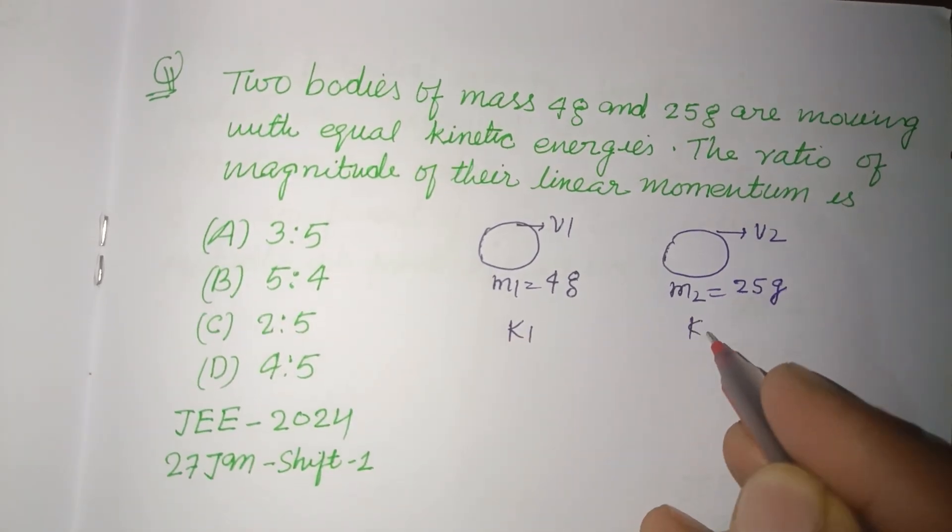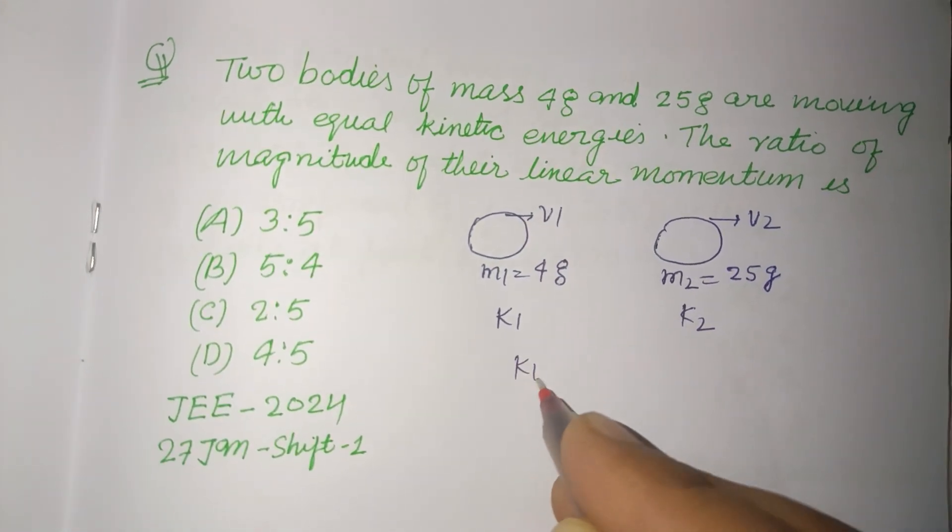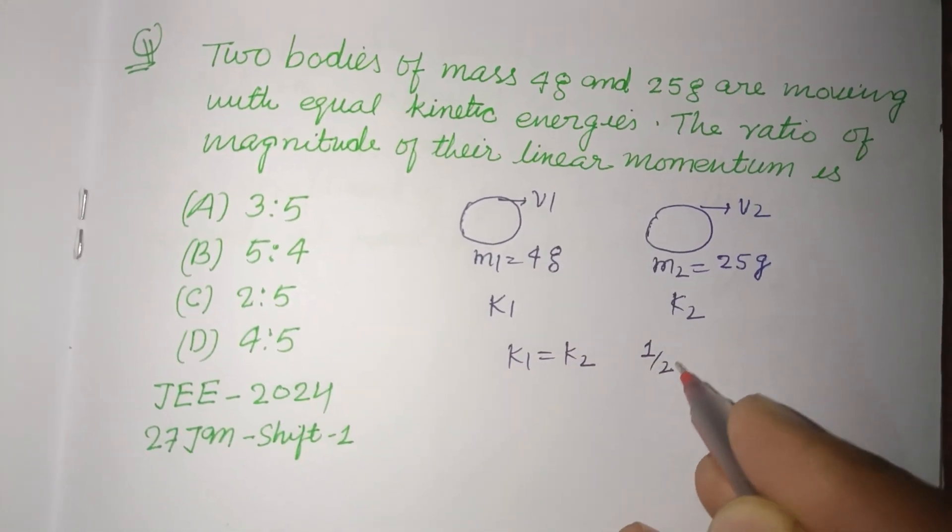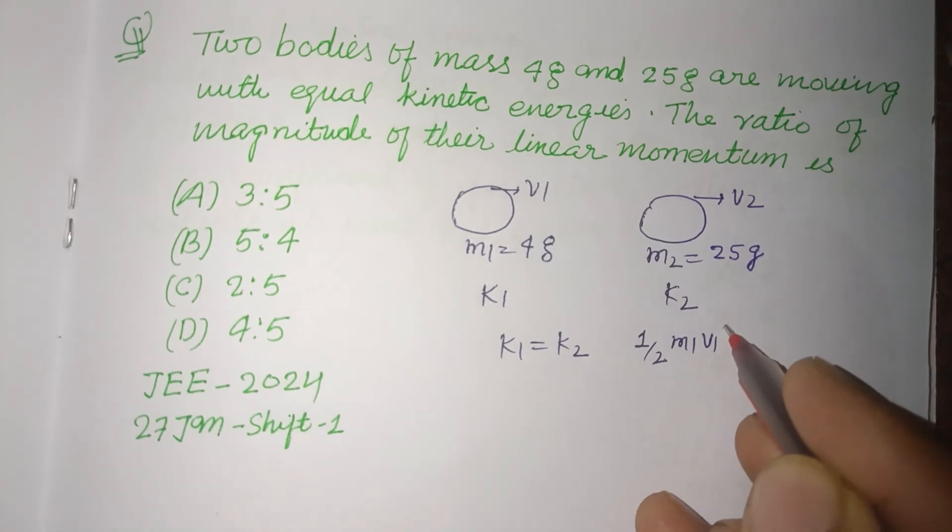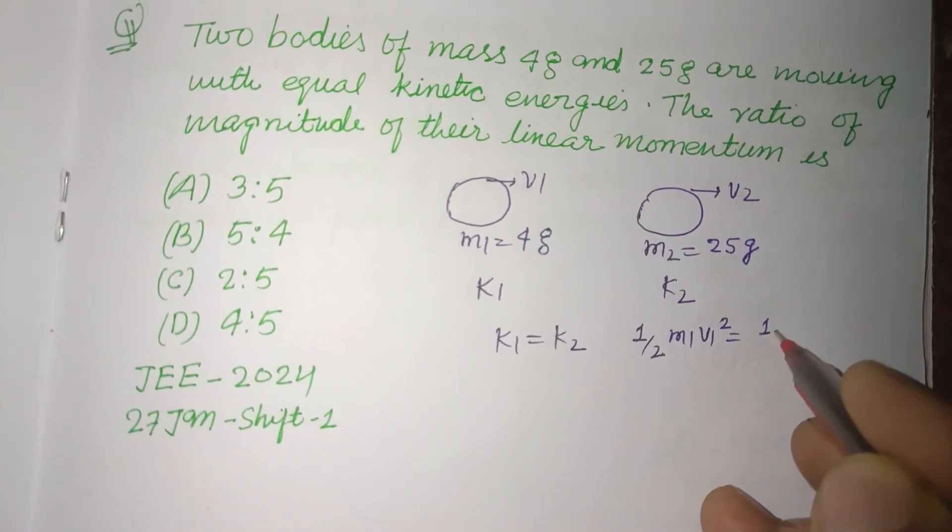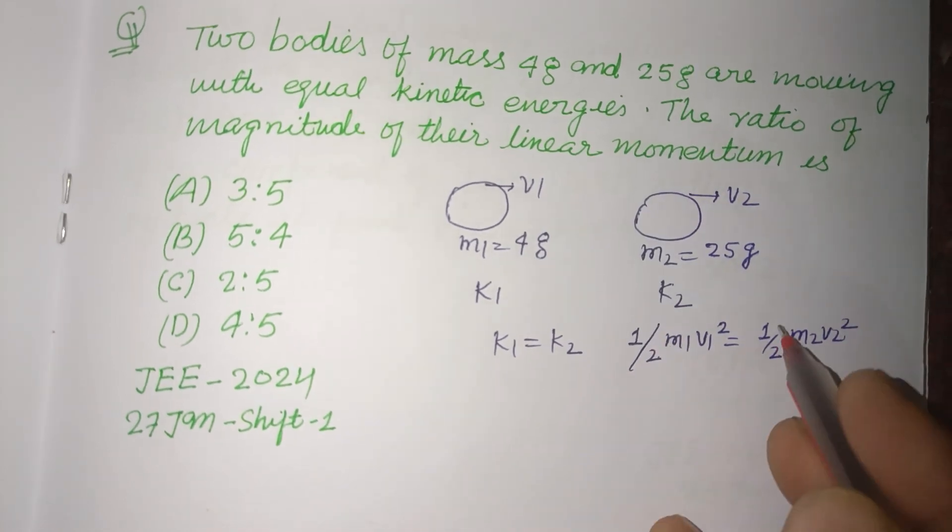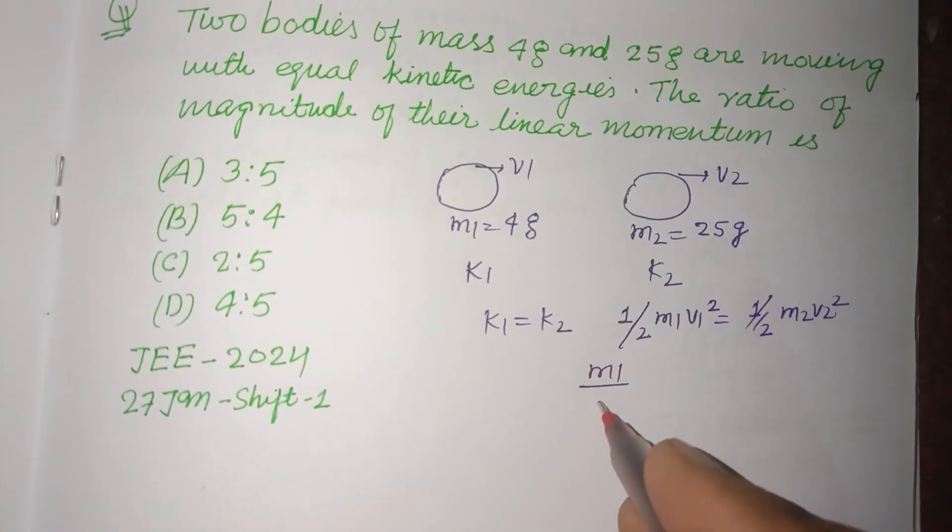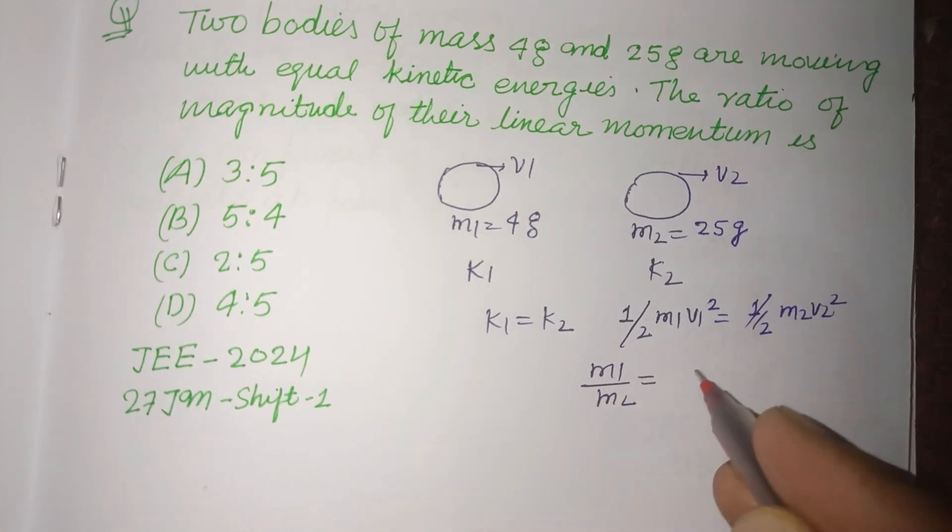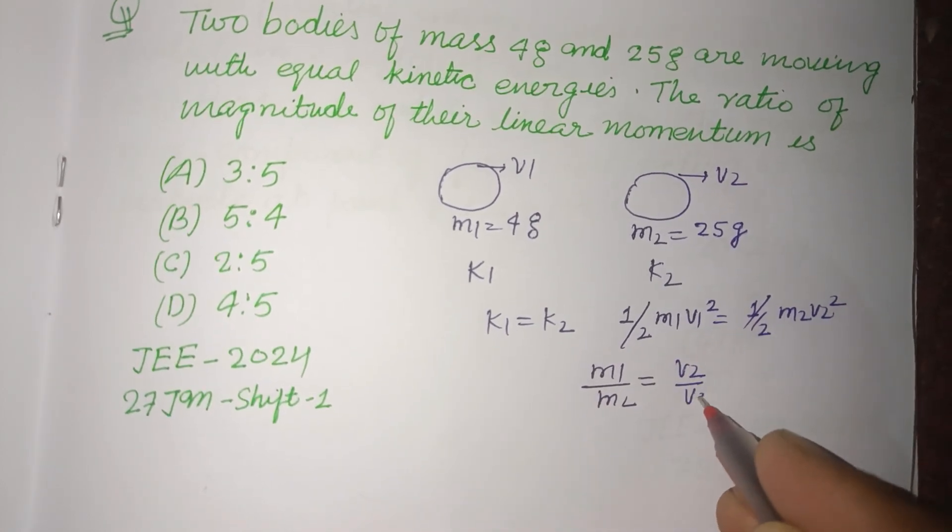So half m1 v1 squared equal to half m2 v2 squared. Half cancels out, so m1 upon m2 equal to v2 upon v1 squared.